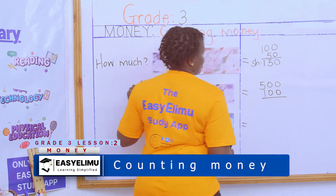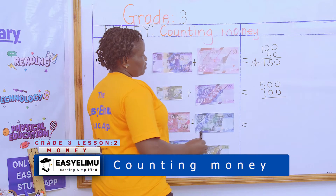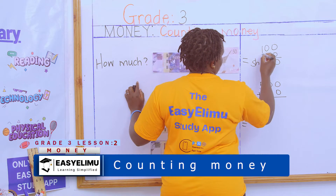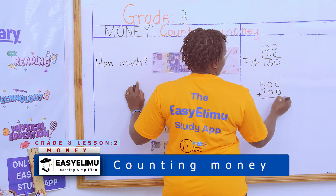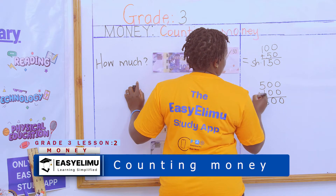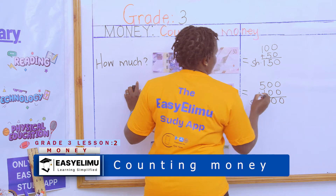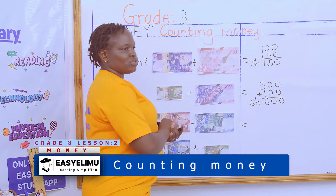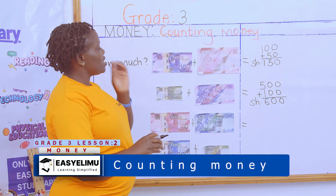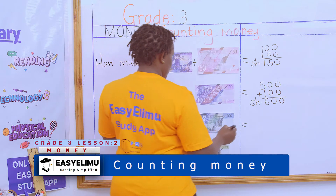Someone is asking you how much do you have. You have together 600 shillings.